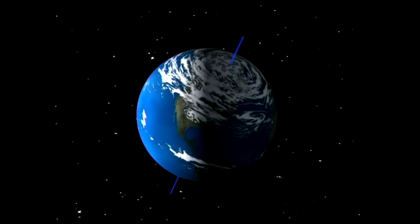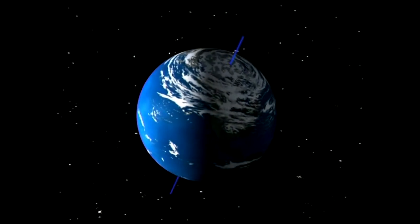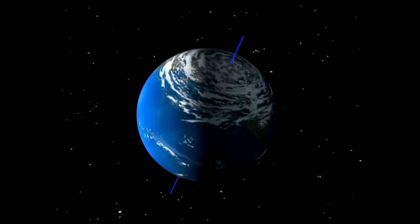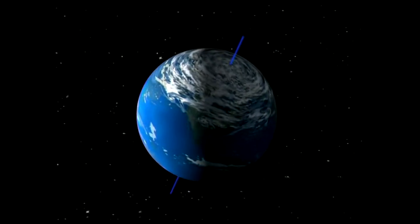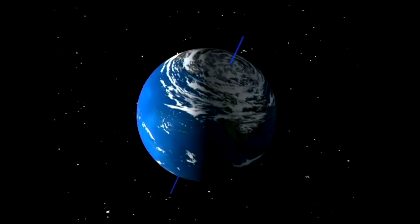But if we look at the Earth from space, we see that half of it is always lit by the sun, while the other half is in darkness. This is what we call day and night.